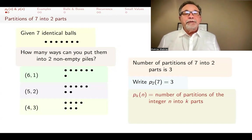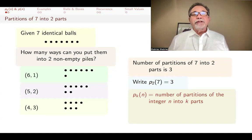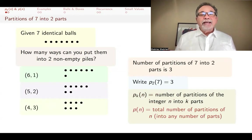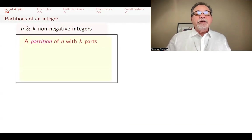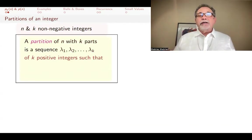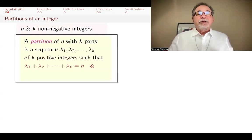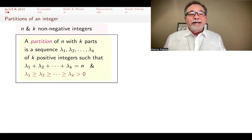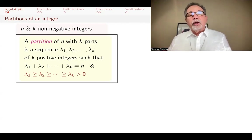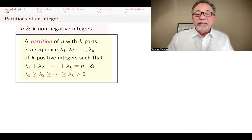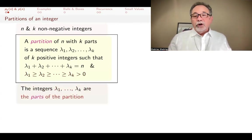In general, p(n, k) is the number of partitions of the integer n into k parts, and p(n) is the total number of partitions of n into any number of parts. n and k are non-negative integers. A partition of n with k parts is a sequence of k positive integers that add up to n. Because the order doesn't matter, we always write them in weakly decreasing order — the biggest one first, then smaller ones with ties allowed. These integers are called the parts of the partition.